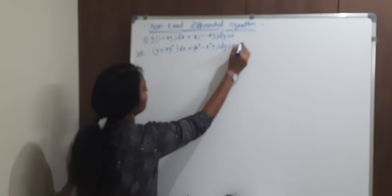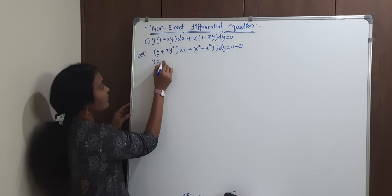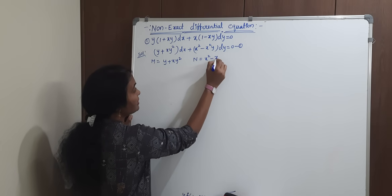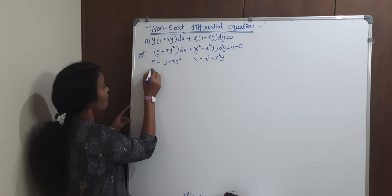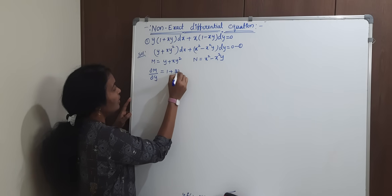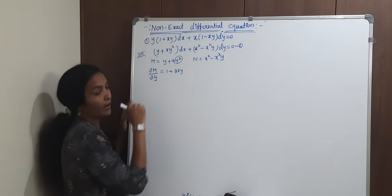First, check the exactness condition. The equation is in the form mdx plus ndy. Here M is y plus xy squared, and N is x minus x squared y. Now differentiate M partially with respect to y: ∂M/∂y equals 1 plus 2xy, since the differentiation of y is 1 and y squared gives 2y, with x treated as constant.